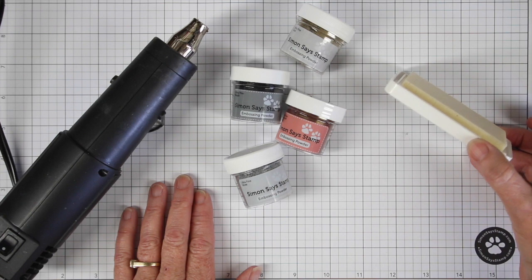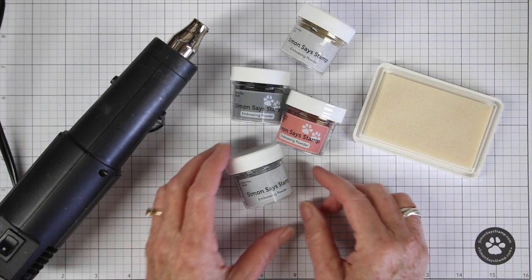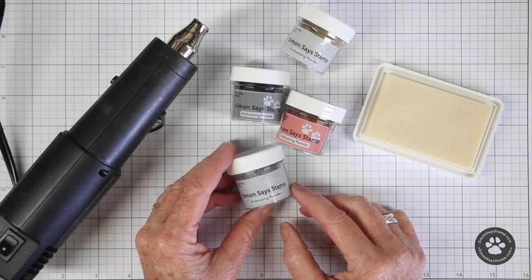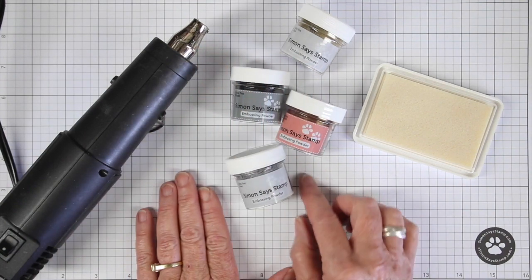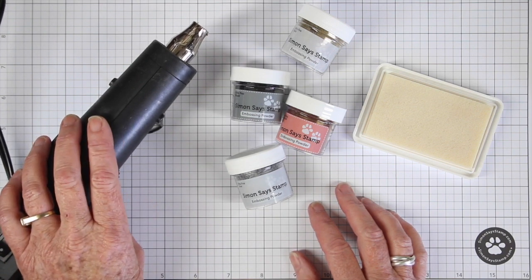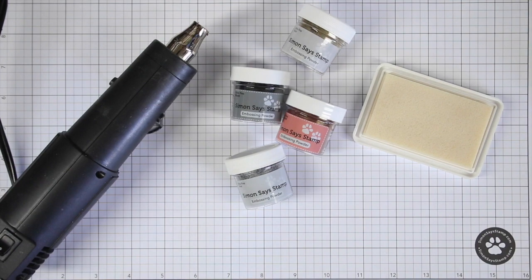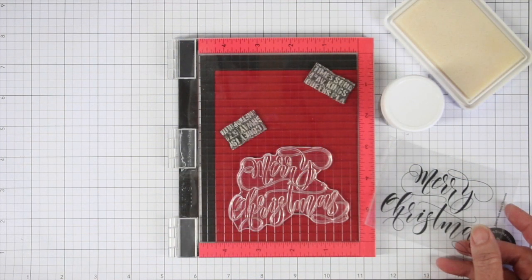This is a clear ink pad from Simon Says Stamp, and that is an embossing pad with clear heavy ink. You also need some type of embossing powder and a heat source. I like to use the old-fashioned heat gun because these get really hot and melt the powders really nicely.